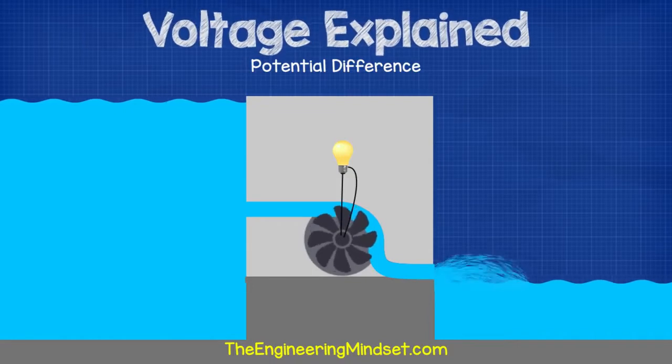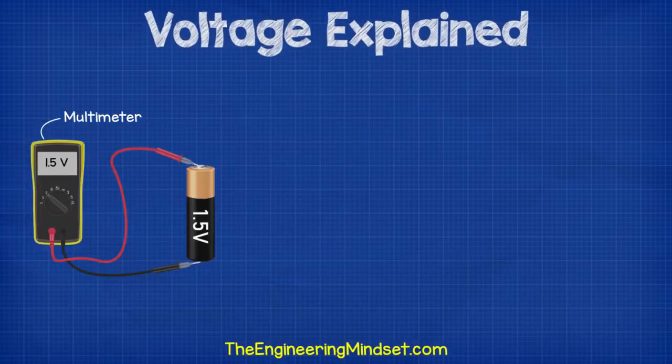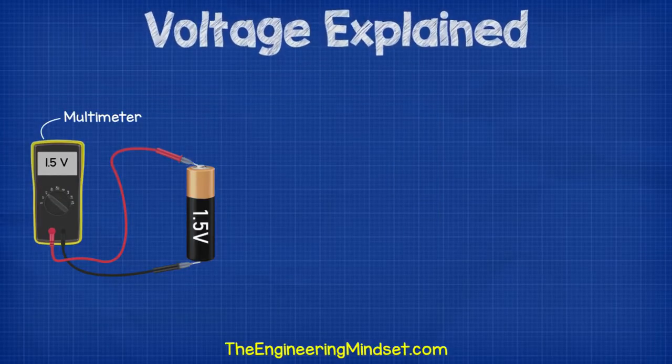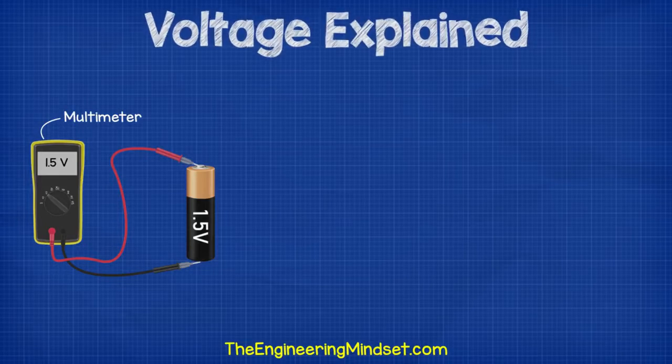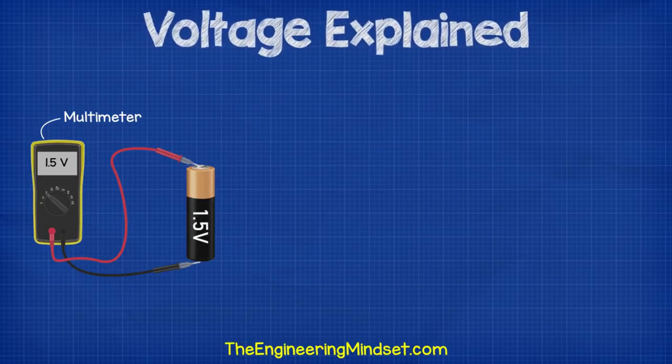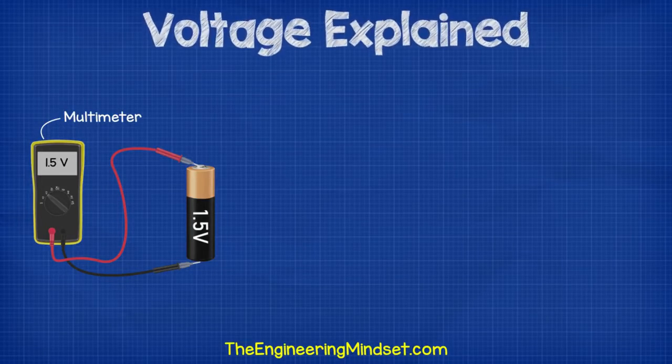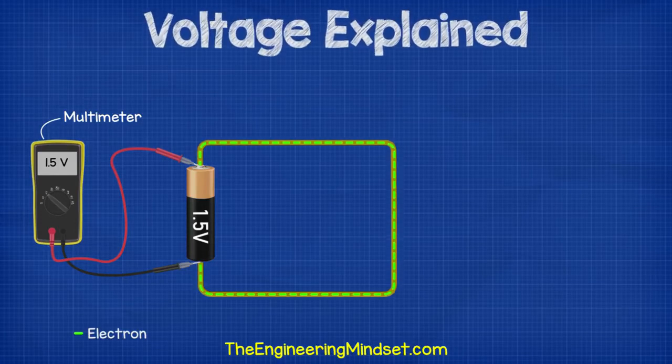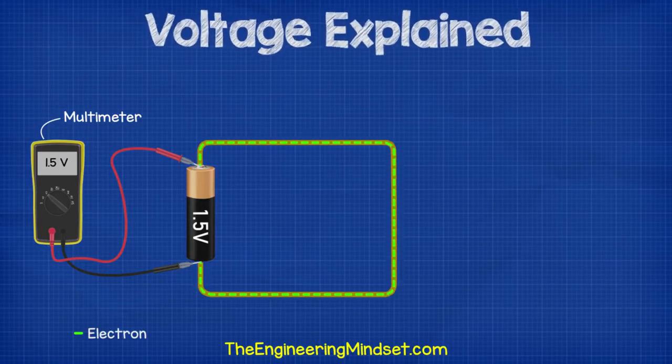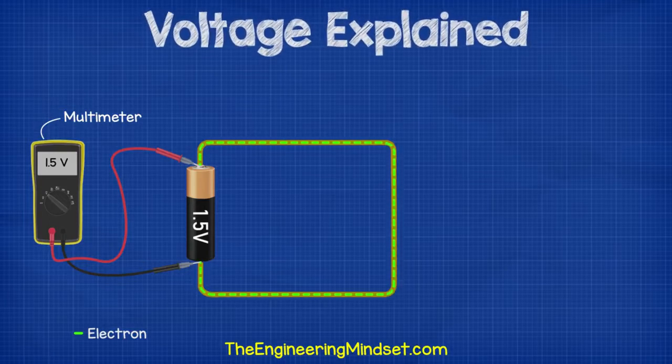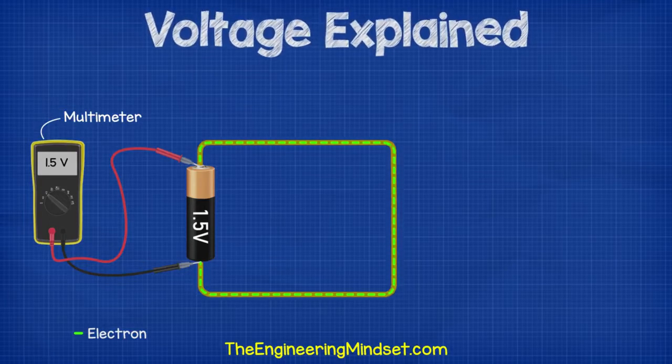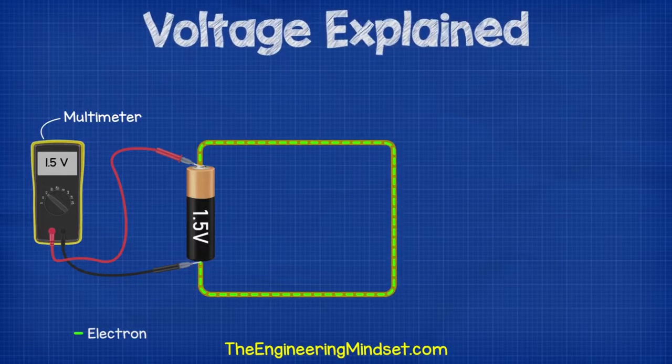Back to the electric circuit. This battery has a potential difference of 1.5 volts between its negative and positive terminals. If we connect a piece of wire to both terminals of the battery, then the pressure of the battery will force electrons to flow in the same direction, all along the same path.